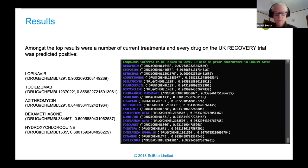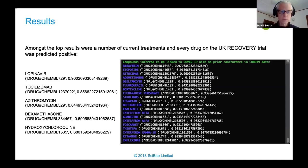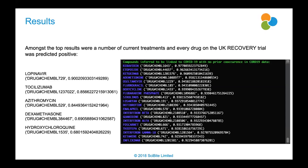On the question of what others are hoped to do with the data, the main uses seen so far are creating knowledge graphs and making the literature more accessible and searchable for domain experts. Those are the two biggest use cases observed.